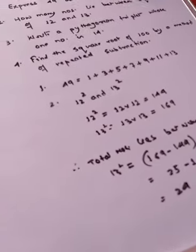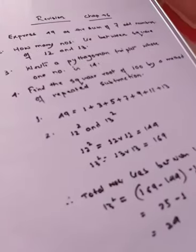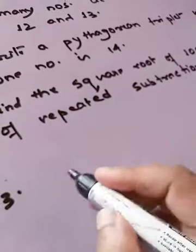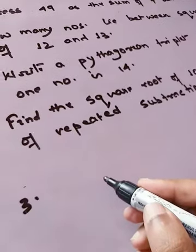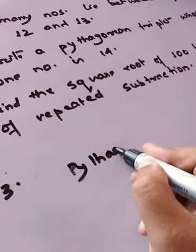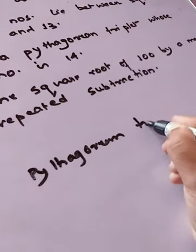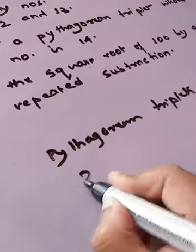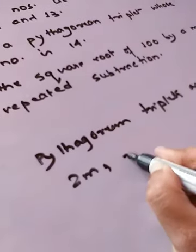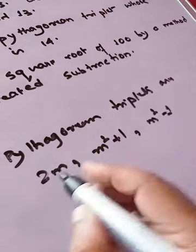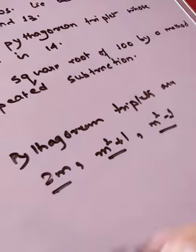I hope all of you have understood. Now let's see question number 3: write a Pythagorean triplet whose one number is 14. Now, Pythagorean triplets are numbers which satisfy the Pythagoras theorem. The three values of a Pythagorean triplet are: 2m, m squared plus 1, and m squared minus 1.